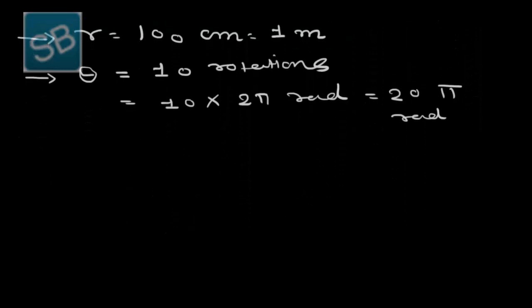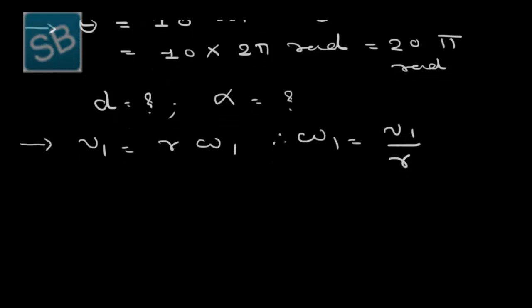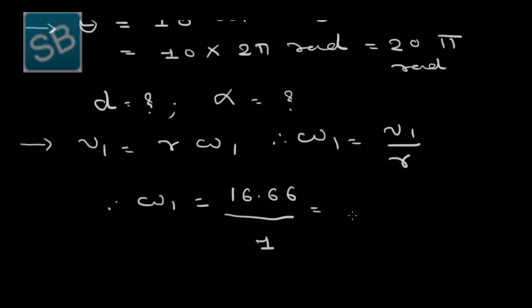We have to find the distance travelled by the truck and the angular acceleration of the wheel. Using the scalar relationship v = rω, the initial angular velocity ω₁ equals V₁/R = 16.66/1 = 16.66 radians per second.